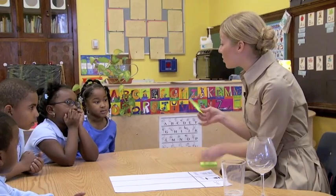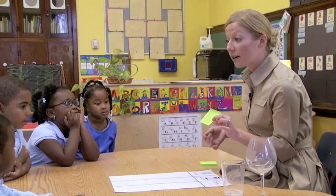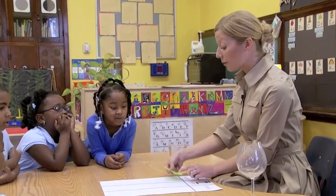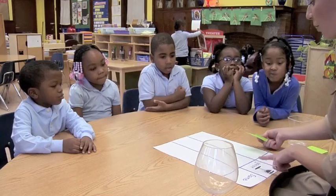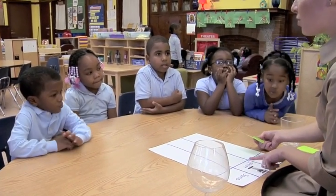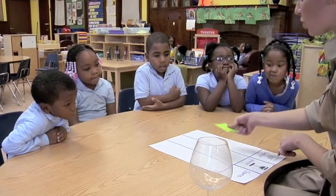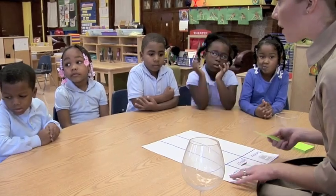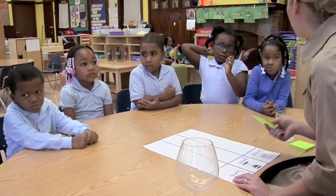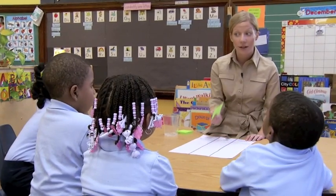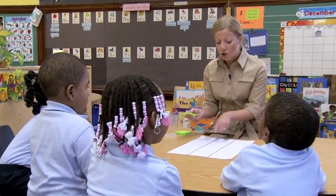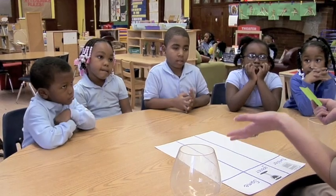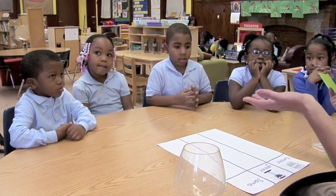I'm going to give each of you a post-it. If you think the tumbler held more juice, you're going to put your post-it here. If you think the goblet held more juice, you're going to put your post-it here. If you think that both cups hold the same amount of juice, you're going to put your post-it here. And when you pick which one you think holds more juice, you need to tell me why — you have to tell me why you think that.